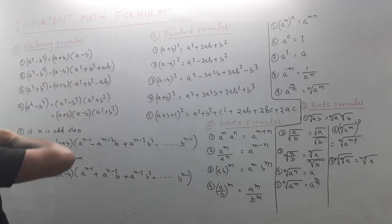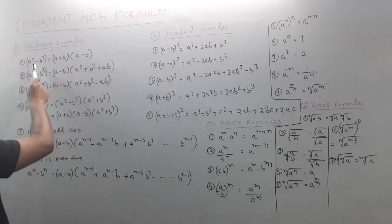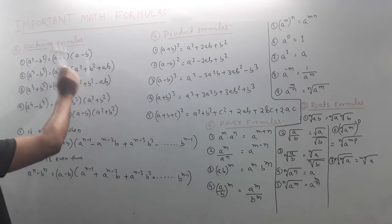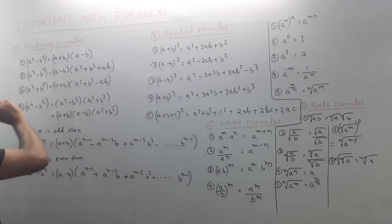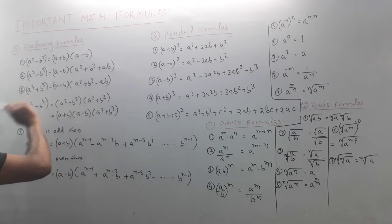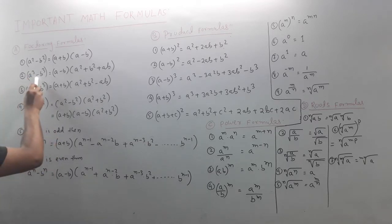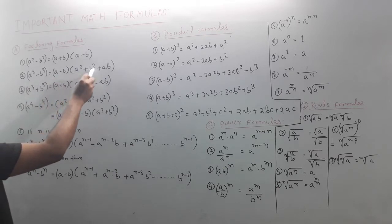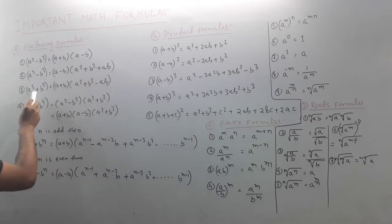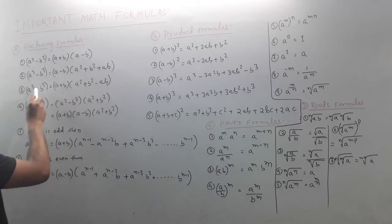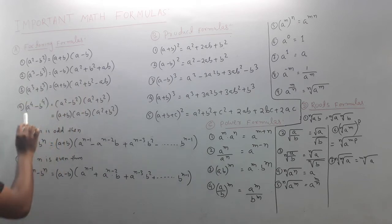First, the factorization formula. The factorization formula is a²-b². So if you have the formula, it should be equal to (a-b). If you have a-b, then you'll have (a-b) plus (a-b), plus (a-b). So if you have (a-b), then you'll be (a+b) into (a-b).